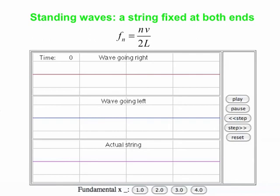So here again you see the fundamental (n = 1), second harmonic, third harmonic, fourth harmonic. It takes four times as long at the fundamental frequency for that oscillation to happen as it does for the fourth harmonic. So at the fourth harmonic, you go through four cycles of that harmonic in the same time you go through just a single cycle at the fundamental. They have similar relationships for the second and third harmonics.